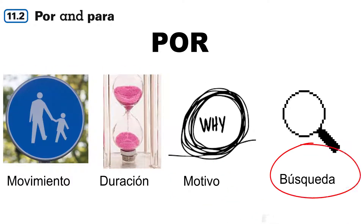And then, if you're looking for something or somebody — if an element of search is implied — then use por. For example, yo paso por mi niña a las cuatro de la tarde. So I pick her up at four; I'm looking for her. Therefore, por.